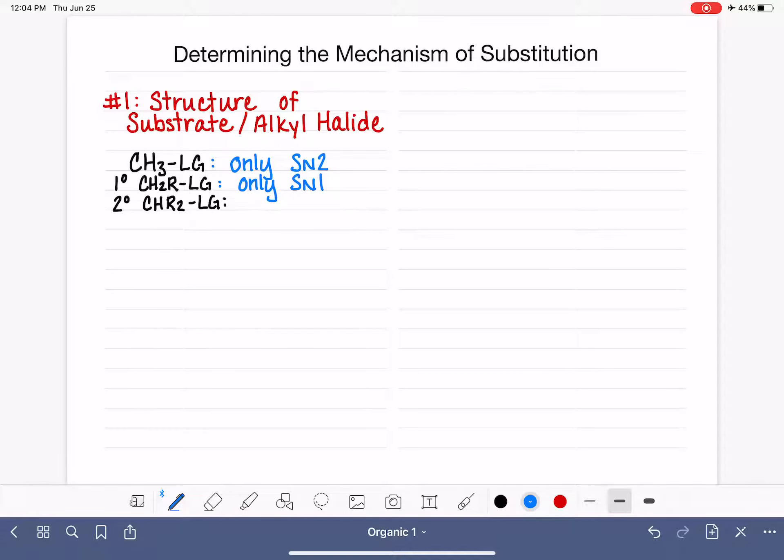these ones can do either SN2 or SN1. So they're capable of doing both mechanisms, and they won't do both at the same time. They will do one or the other. We're going to have to look at a different variable to predict which mechanism will predominate. So we can't use the structure of the substrate to predict the mechanism.